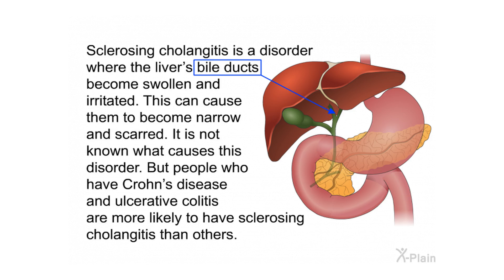Sclerosing cholangitis is a disorder where the liver's bile ducts become swollen and irritated, causing them to become narrow and scarred. It is not known what causes this disorder, but people who have Crohn's disease and ulcerative colitis are more likely to have sclerosing cholangitis than others.